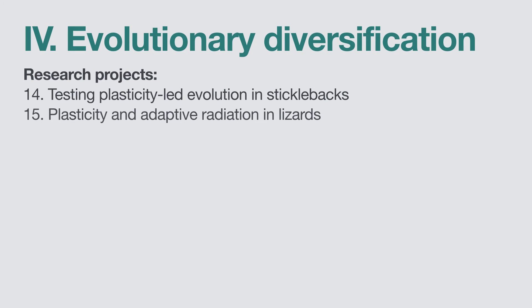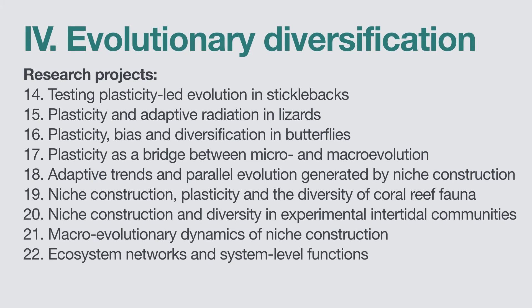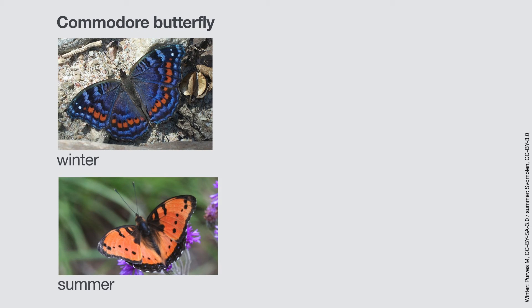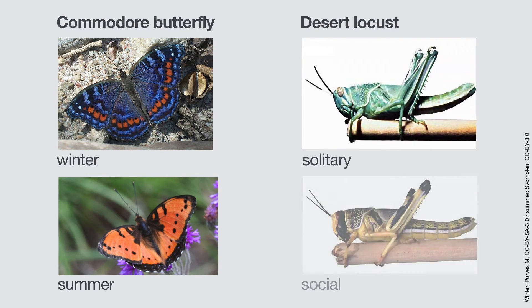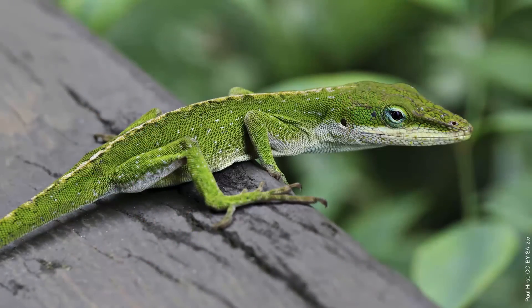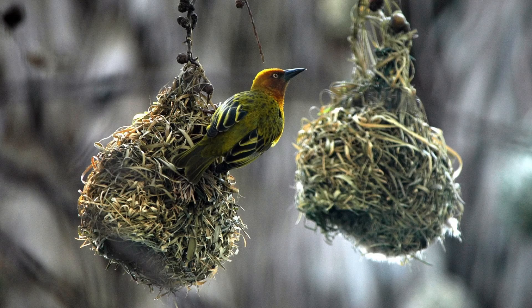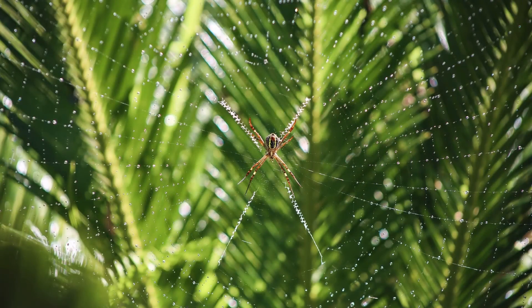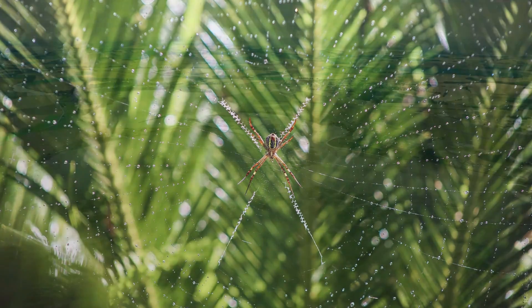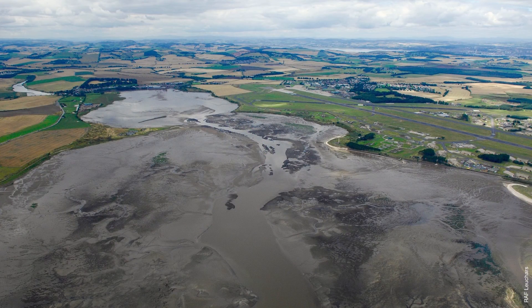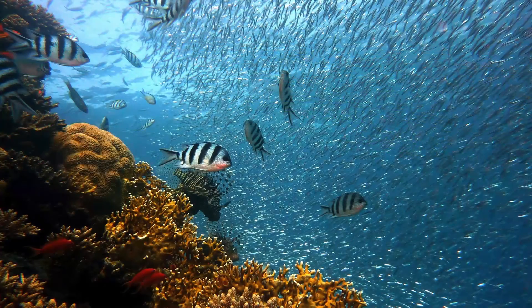Our final theme focuses on directional biases in evolution. A central concept is developmental plasticity — the ability of individuals to change their form in response to their environment — which is a major source of bias. Projects on lizards, fish and insects would test the hypothesis that plasticity initiates and directs evolution by shaping the variation available to selection. We're also rigorously testing the extent to which niche construction, that is, changes in environments caused by organisms, directs adaptive evolution using experimental systems such as bacterial communities and coral reefs.